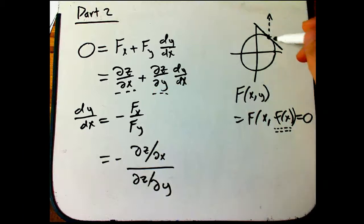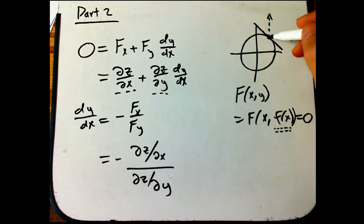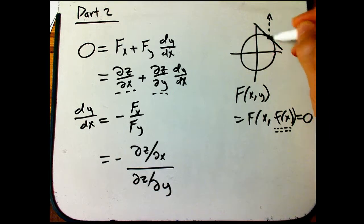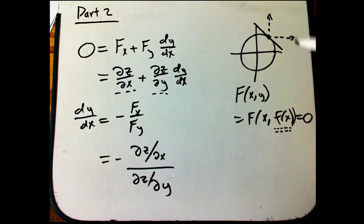And here's the cool thing. What we're most interested in is not really being able to walk anywhere in the plane. We want to know how we have to walk if we're constrained to lie on the implicitly defined curve, the level set.